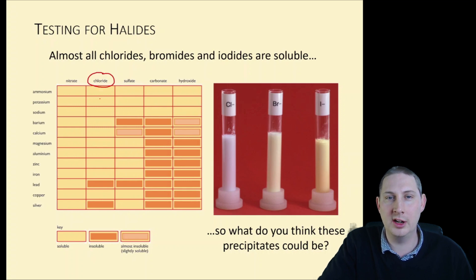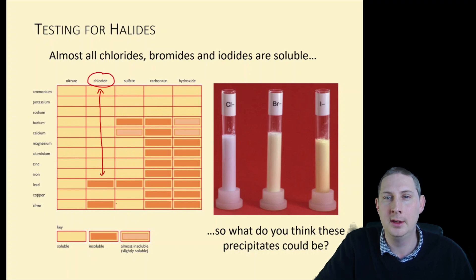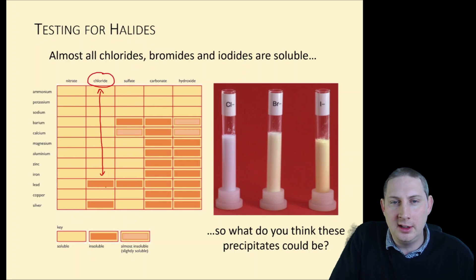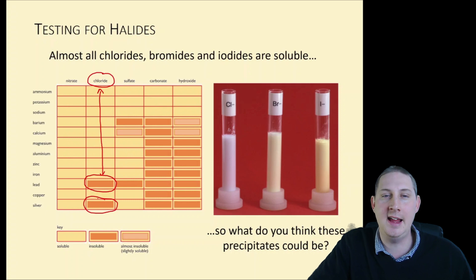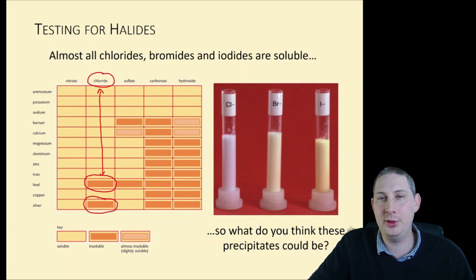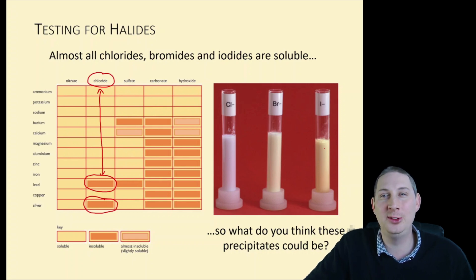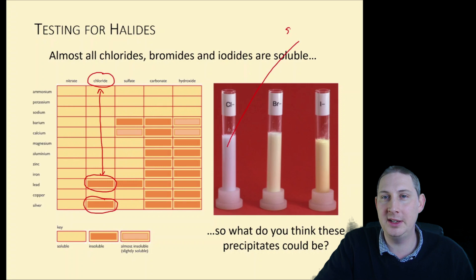Halides such as chlorides are almost all soluble, with a couple of exceptions: lead chloride, lead bromide, and lead iodide are insoluble; silver chloride, silver bromide, and silver iodide are also insoluble. We're clearly not going to let you use lead in a chemistry laboratory, so the precipitates we use must be silver halides — silver chloride and silver bromide.